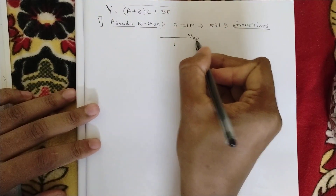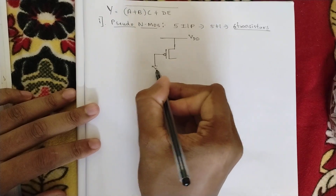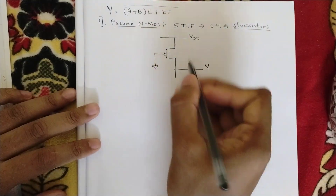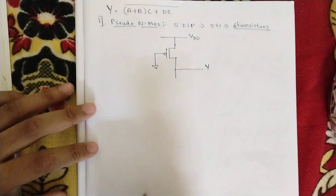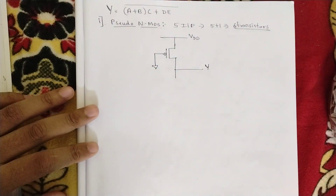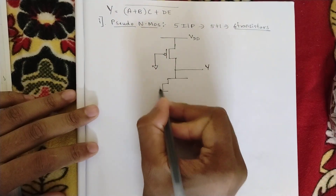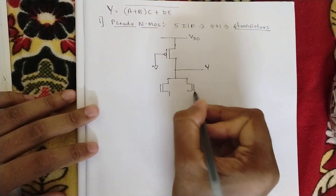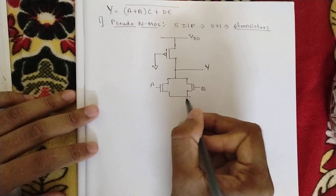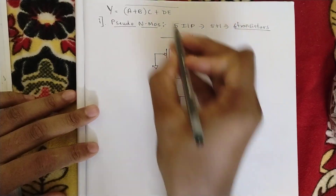Based on that let us draw the pseudo NMOS circuit. In the VDD pull-up part we are having only one PMOS transistor and that gate terminal is permanently connected to ground. From here we are checking the output. For the pull-down part the NMOS logic we should be applying is: a+b so those two should be in parallel, into c so a and b into c should be in series, plus d and e.